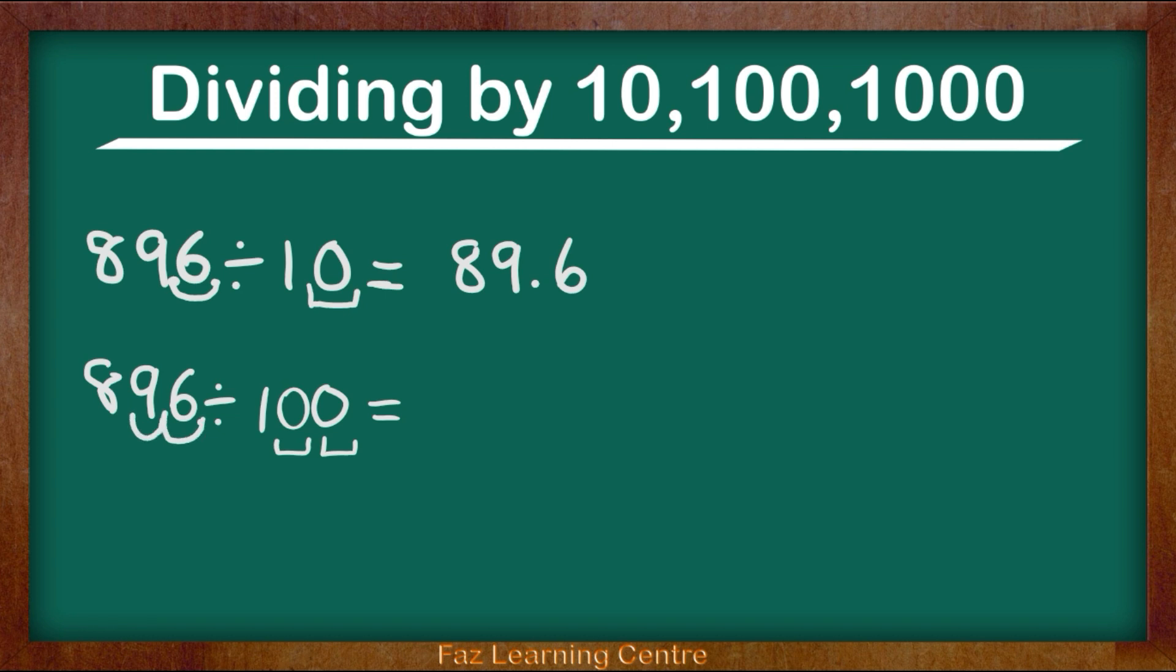So let's go: 1, 2. So now this is what my answer is. Let's write it down as it is: 8.96. So 896 divided by 100 gives me 8.96.